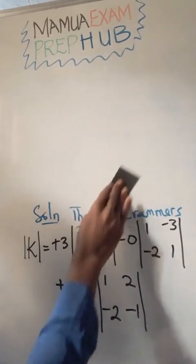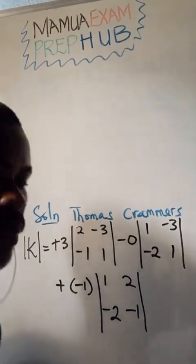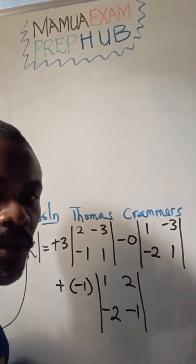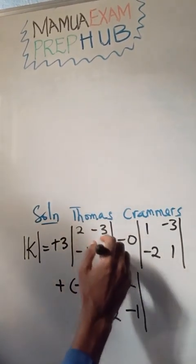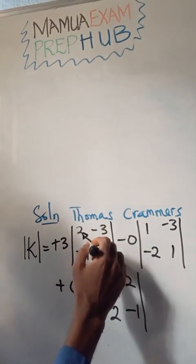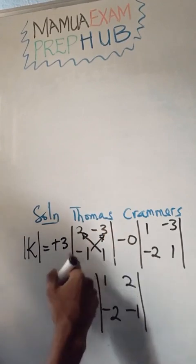Alright, for the next step we are going to multiply diagonally while we subtract. So we multiply diagonally like this, while we subtract.